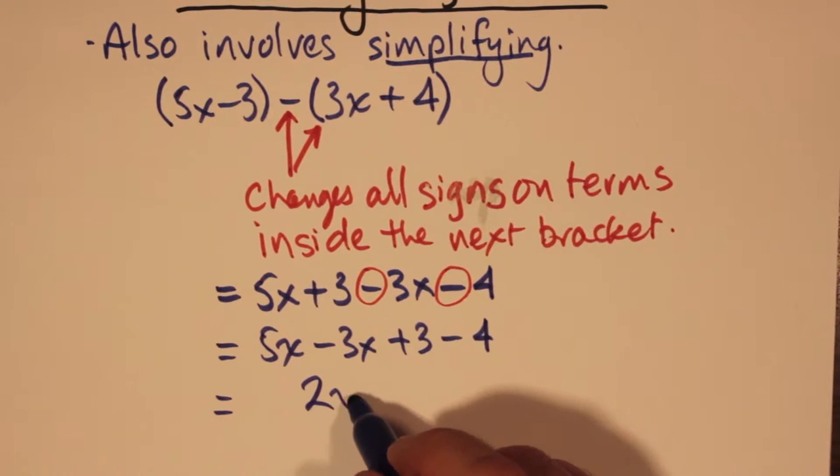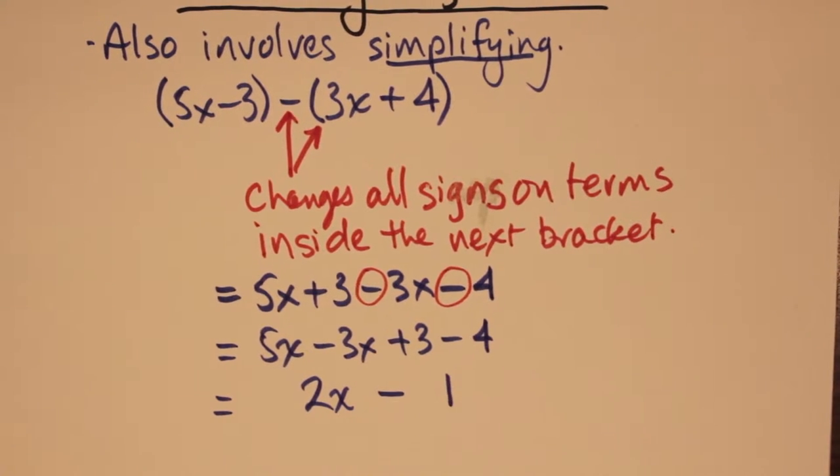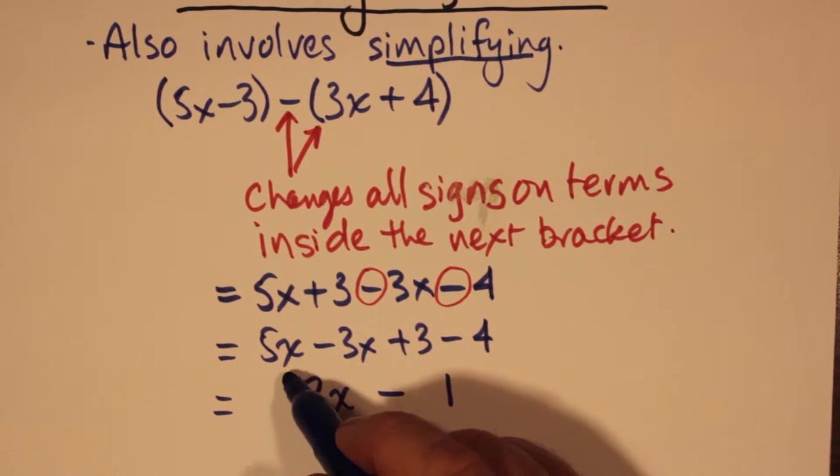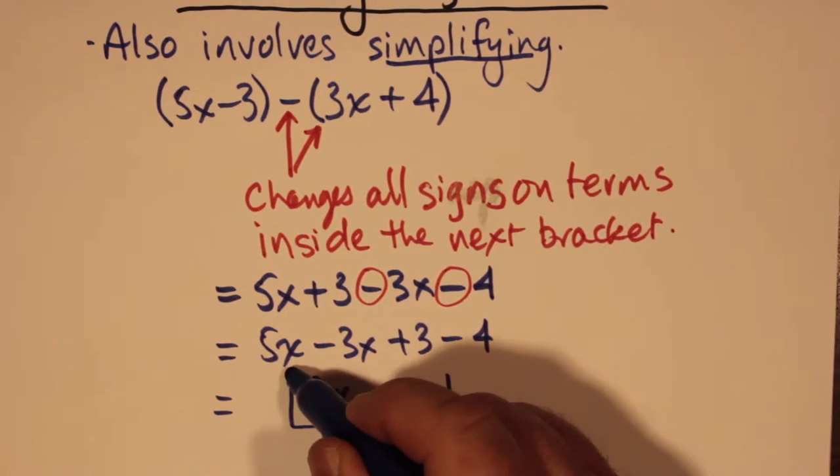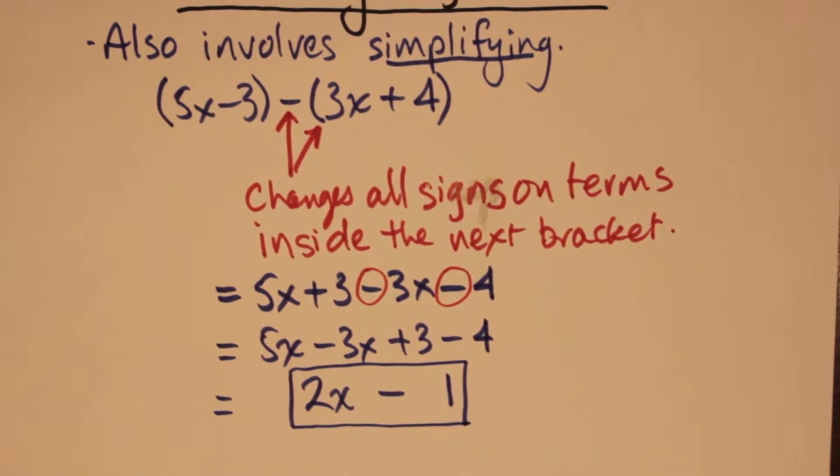The 5x minus 3x becomes 2x, and the 3 minus 4, well, 3 take away 4, you get negative 1. And that's our answer.